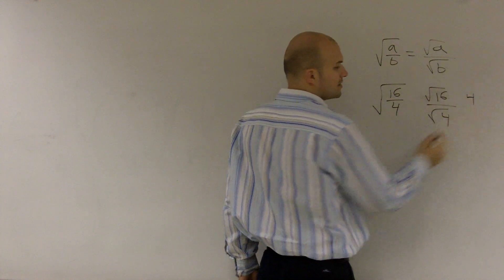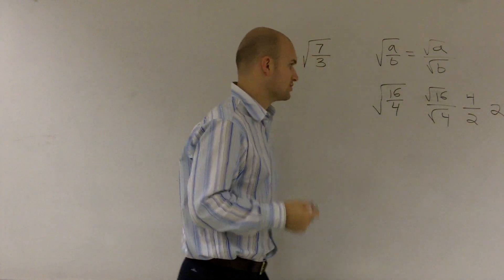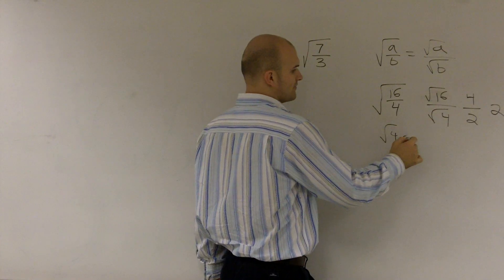Well, the square root of 16 is 4. And the square root of 4 is obviously 2. 4 divided by 2 is 2. Or you can do it this way. 16 divided by 4 is 4. The square root of 4 is 2.